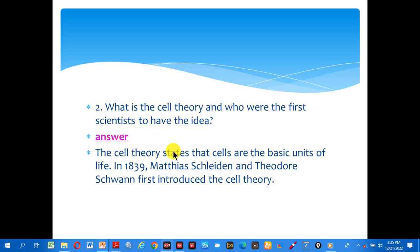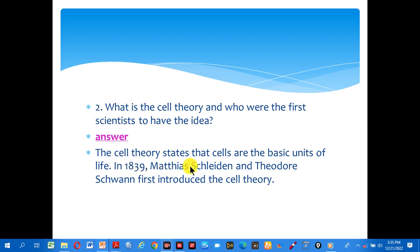Okay, the second question: what is the cell theory, and who were the first scientists to have the idea? Look at the answer. The cell theory states that cells are the basic unit of life. In 1839, Matthias Schleiden and Theodor Schwann first introduced the cell theory.